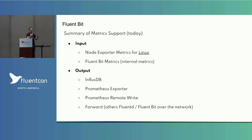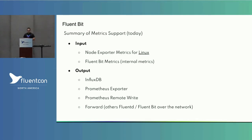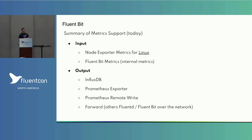As a summary: with cmetrics integrated into Fluent Bit, the major pain from our users in the metric space is that they want a unified engine. They're using the Prometheus node exporter to collect metrics from the host, and they told us, 'Why don't you create a Fluent Bit input plugin that gathers metrics the same way node exporter does?' So we essentially re-implemented a subset of node exporter as a plugin, using cmetrics. Fluent Bit metrics now use cmetrics under the hood.